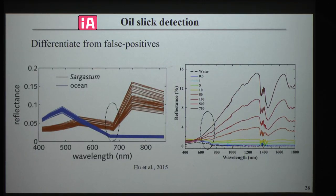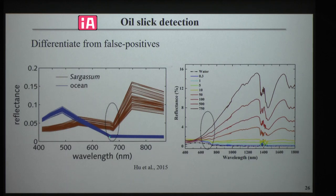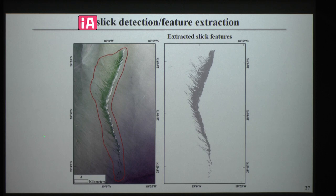The next step is to differentiate spatial anomalies from false positives. Taking sargassum as an example: sargassum mats on the ocean surface look very similar to oil emulsion. But sargassum features chlorophyll absorption at 670 nm, while oil emulsion does not have these absorption features in this band. By spectral diagnosis, the false positives can be ruled out. After going through all the pixels in the region of interest, the oil slick features can be extracted.